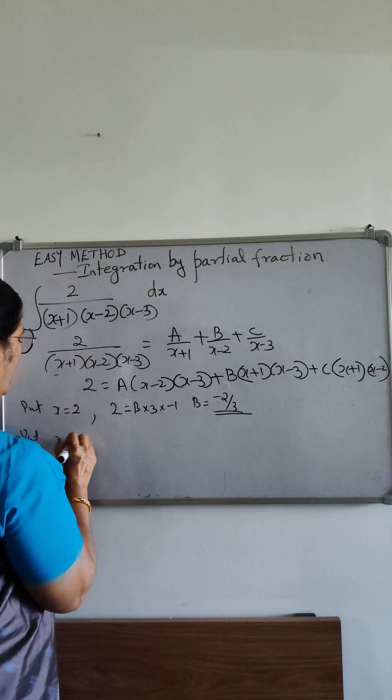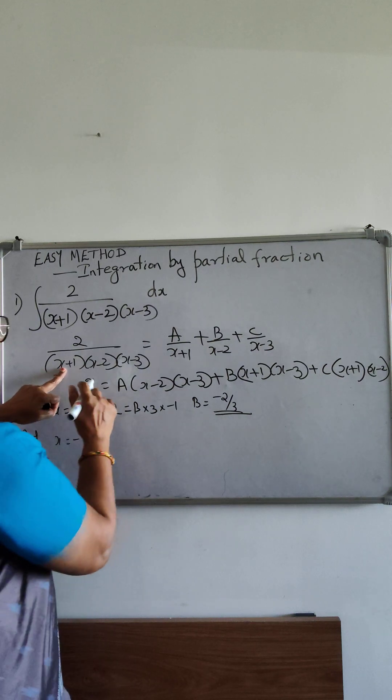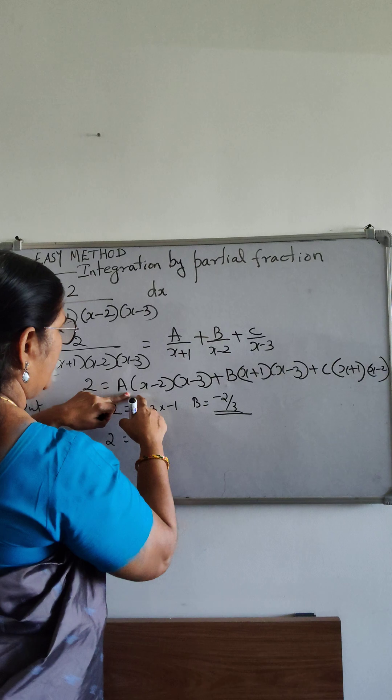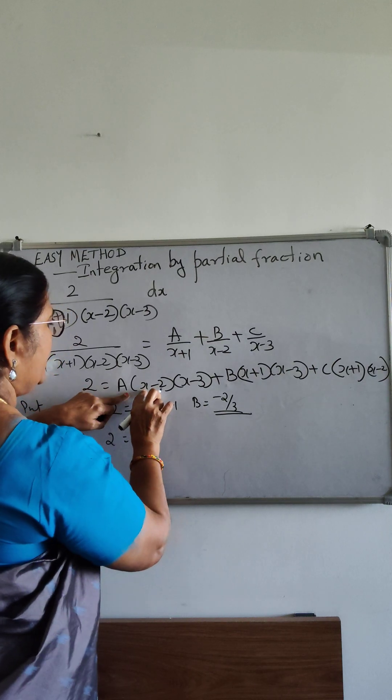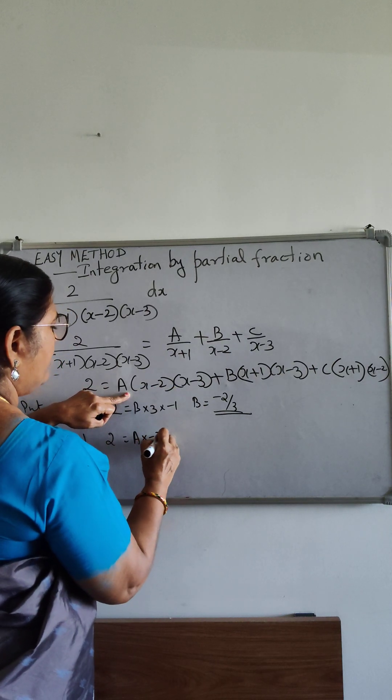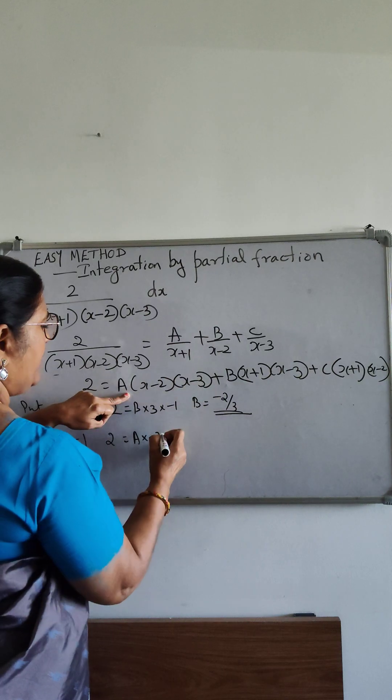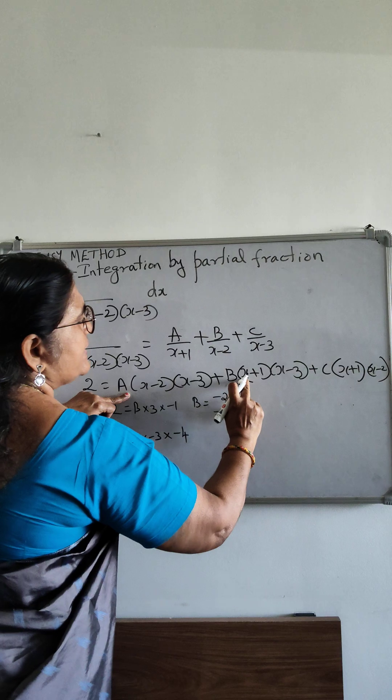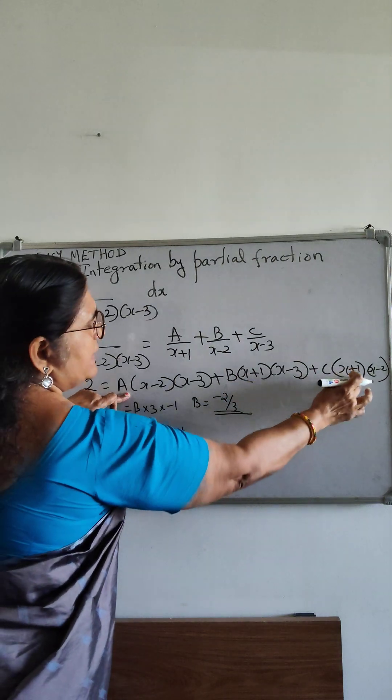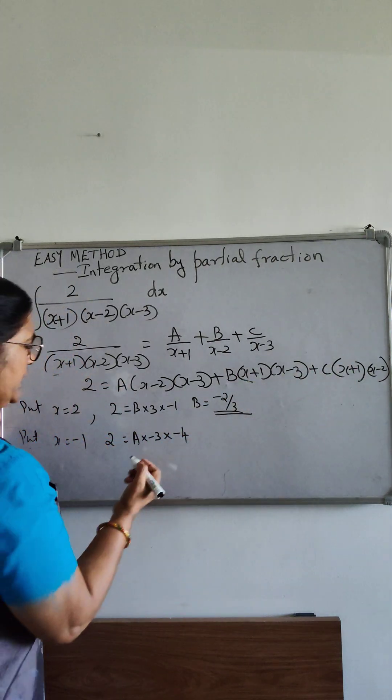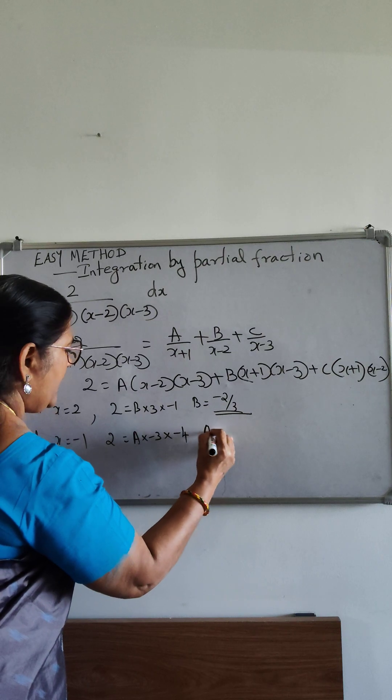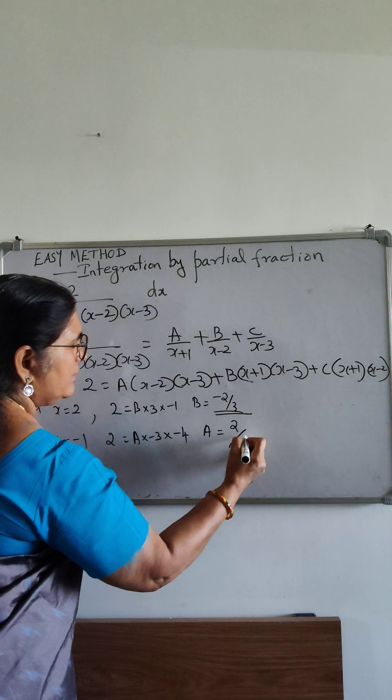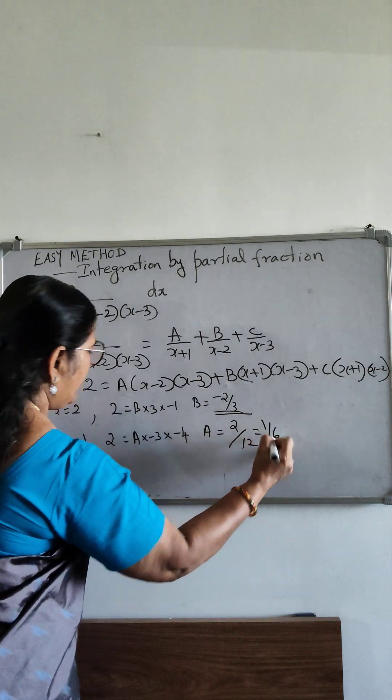Put x equal to minus 1. So 2 equal to a into minus 1 minus 2 is minus 3, minus 1 minus 3 is minus 4. So these two terms cancel. These two terms vanish. So a equal to 2 by 12, that is 1 by 6.